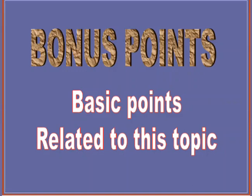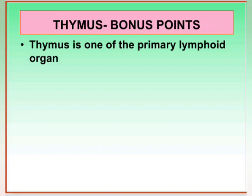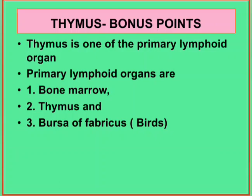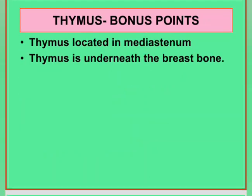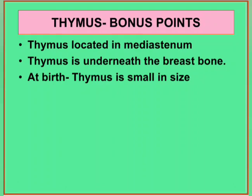Bonus Point segment. Some basic points related to the thymus gland. The thymus is one of the primary lymphoid organs in our body. Though it acts as a partial endocrine gland, its main function is providing immunity. Human beings have two primary lymphoid organs: bone marrow and thymus. Birds have an additional primary lymphoid organ called the bursa of Fabricius. The thymus gland is endodermal in origin. It is located in the mediastinum — that means in between the two lungs.